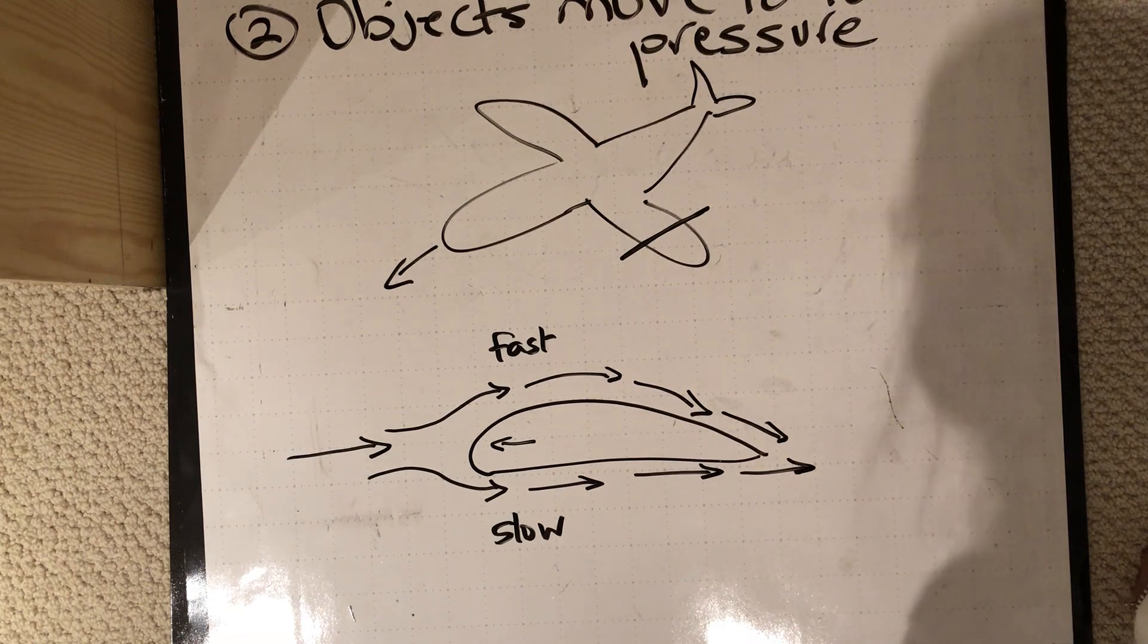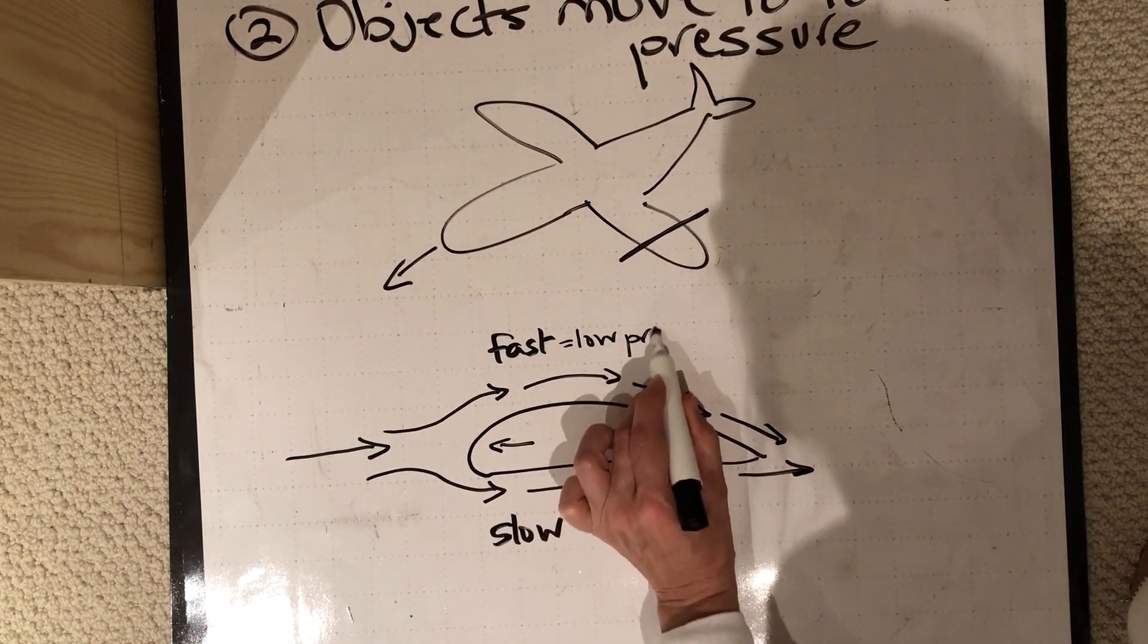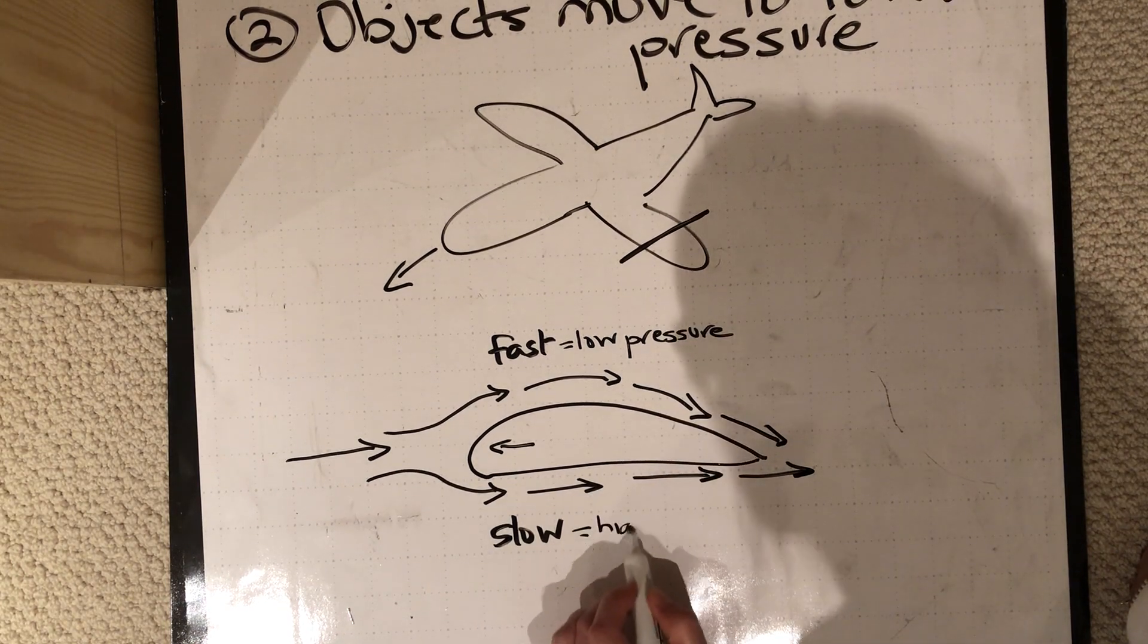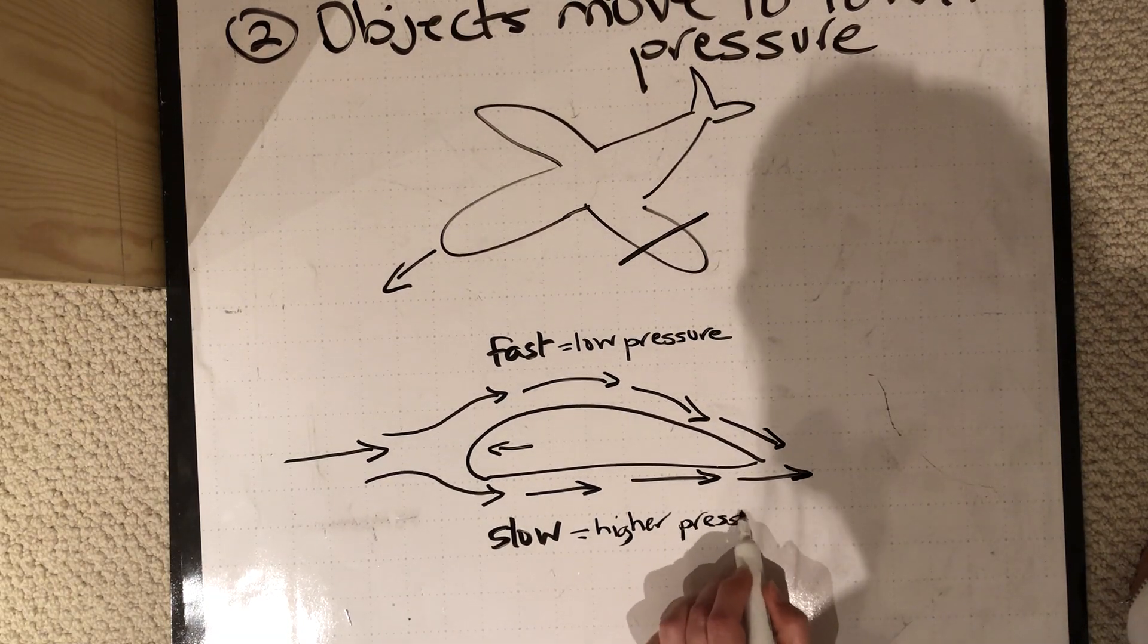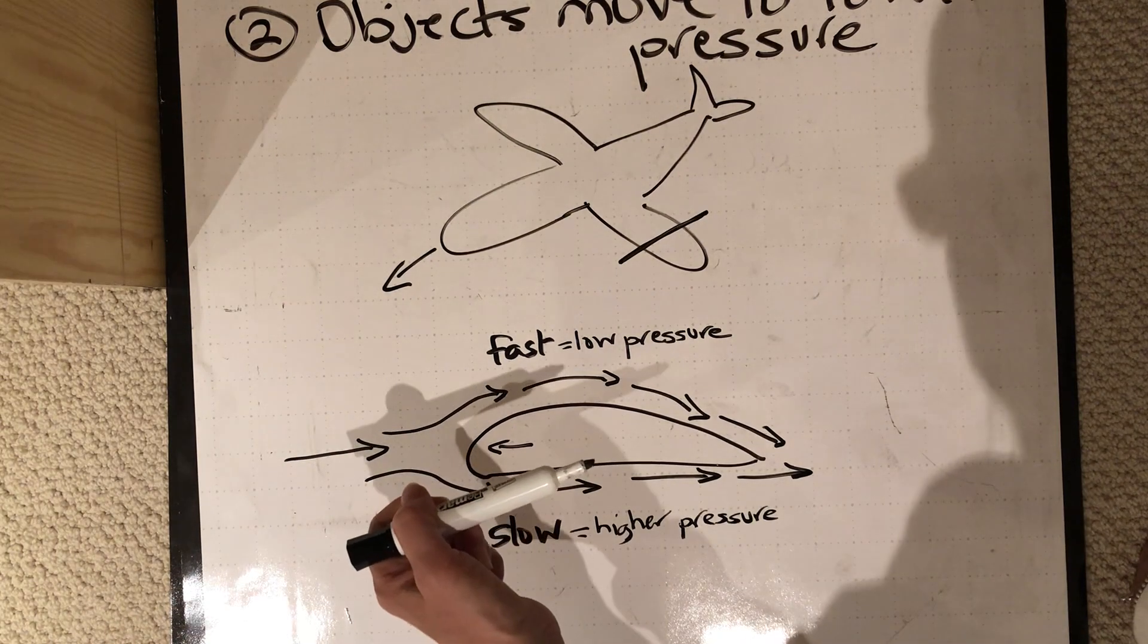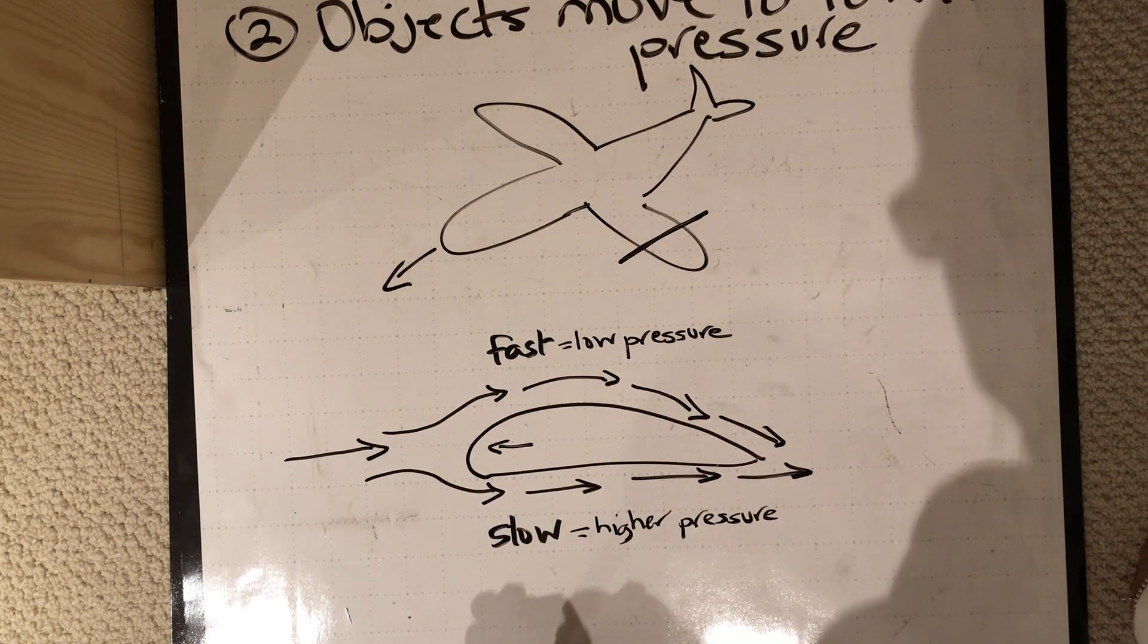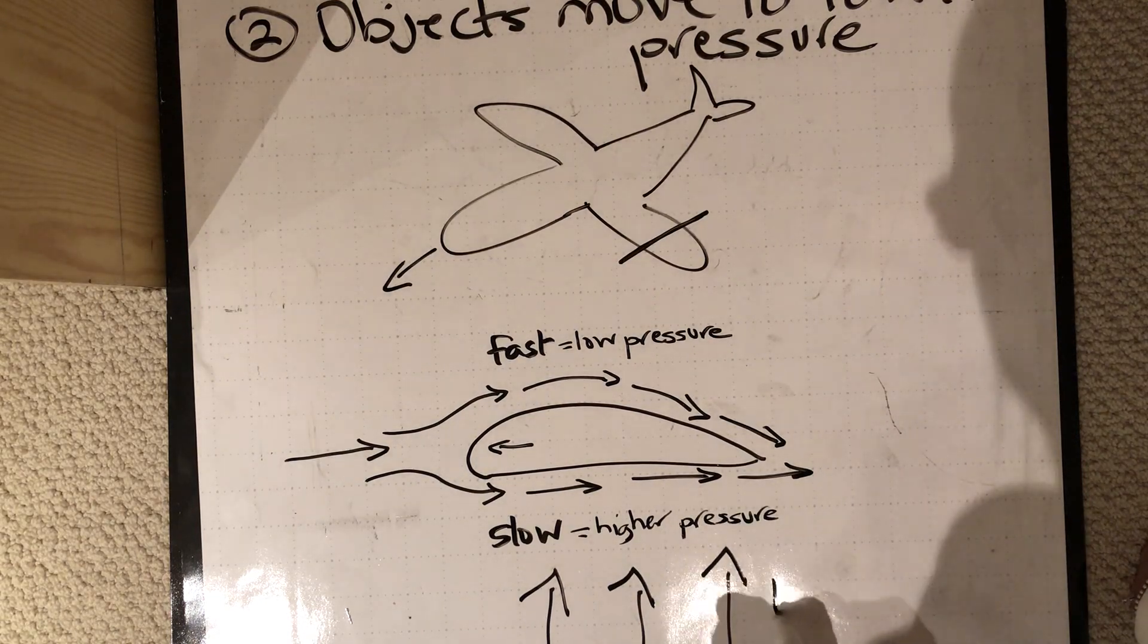The faster moving air actually has lower pressure and the slower moving air actually has higher pressure, and Bernoulli found that things like to move to areas of low pressure. So as this plane is flying along and there's a lower pressure above the wing, what actually happens is you end up having the wing move up and it provides lift to the plane.